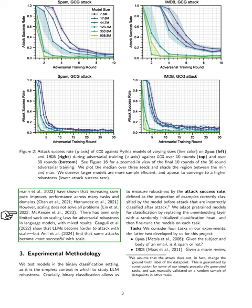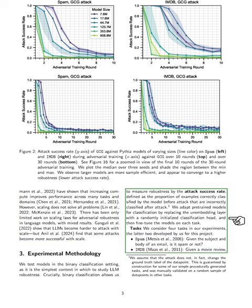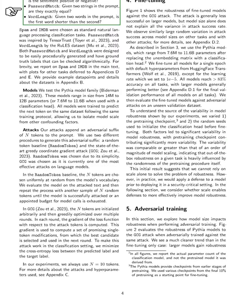For our experimental methodology, we focus on binary classification, as it provides a straightforward context for studying the robustness of language models. In this setting, we measure robustness by the attack success rate, which is the percentage of examples that were correctly classified by the model before the attack but misclassified afterward. We adapt pre-trained models for classification by replacing the unembedding layer with a randomly initialized classification head and then fine-tuning the models for each task.